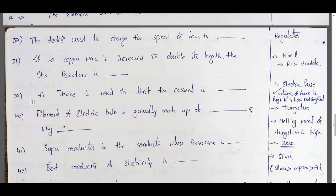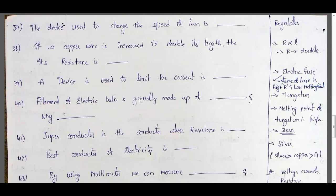A device used to limit the current is an electrical fuse. The important property of a fuse is that it has high resistance and low melting point. The filament of an electric bulb is generally made of tungsten, because tungsten has a very high melting point.